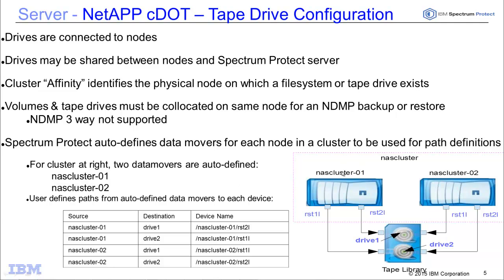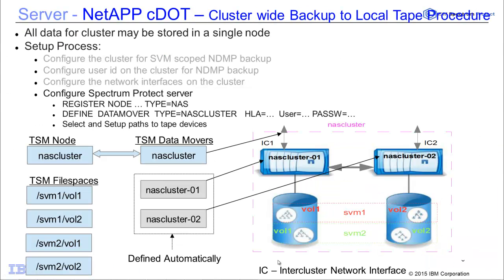In this example, we have a NAS cluster, and the two data movers that are auto-defined include NAS cluster-01 and NAS cluster-02. When we look at the device name for defining the path, that will be /NAS-cluster-01/RS2L for drive 1 attached to NAS cluster 1, and so forth. This becomes important when we look at slide six, where we're talking about how to define a NAS cluster to Spectrum Protect. The first piece that needs to be done is inside the NetApp device — the NetApp admin will need to configure the cluster for SVM scoped NDMP backup, and identify an ID and password needed for Spectrum Protect definitions.